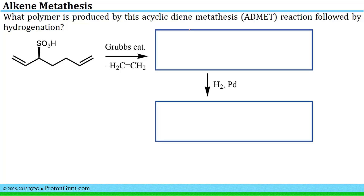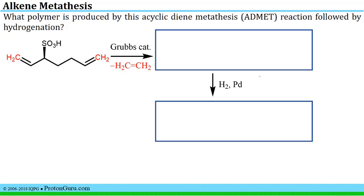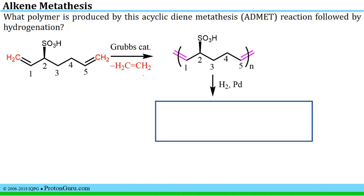The final variation of alkene metathesis covered in the primer is ADMET, which stands for acyclic diene metathesis. Here we have a two-step process: we're asked to provide the polymer produced upon initial ADMET reaction of this starting material, followed by hydrogenation — a reaction we saw back in organic chemistry one. For the ADMET step, we know that the chain-end CH2 groups should be eliminated as ethylene gas, and the rest of the chain — the five carbons — should end up in the ADMET-produced polymer. We draw that in: the five carbons with the now chiral center being retained, since we didn't make or break any bonds to the carbon to which the sulfonic acid is bound.